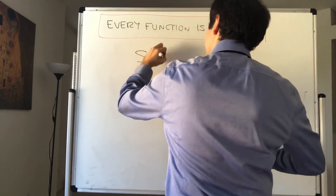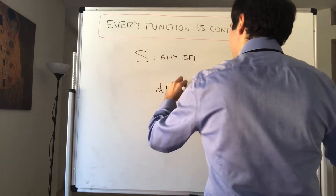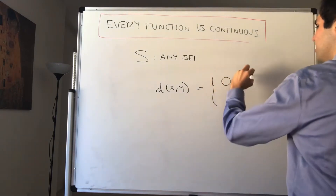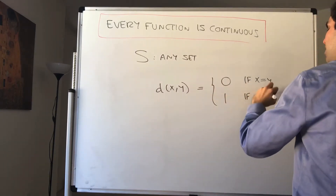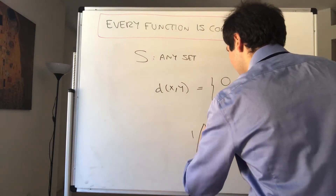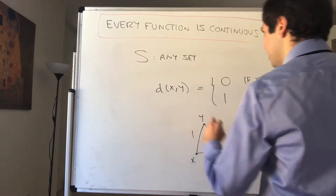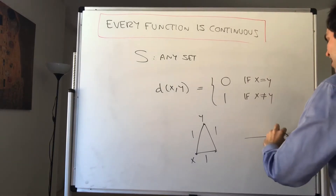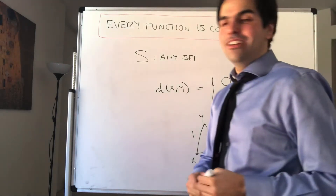Let S be any set, and consider the following metric: d(x,y) says the distance is zero if the points are the same, or exactly one if they are not the same. Think for instance of an equilateral triangle with side length one — different points are exactly one apart.